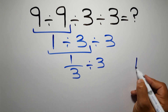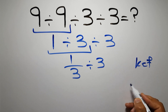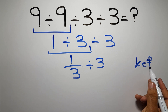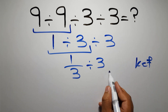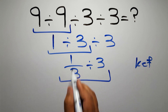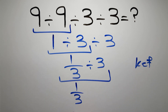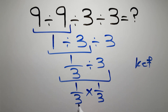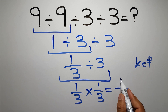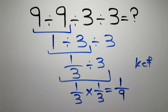According to the KCF rule — K stands for keep, C stands for change, and F stands for flip — we keep the first fraction, change division to multiplication, and flip the second fraction. So we have 1 over 3 times 1 over 3, which equals 1 over 9.